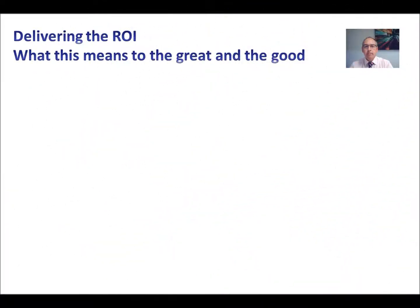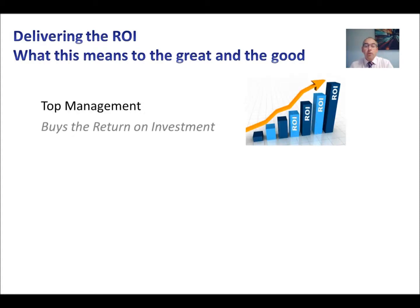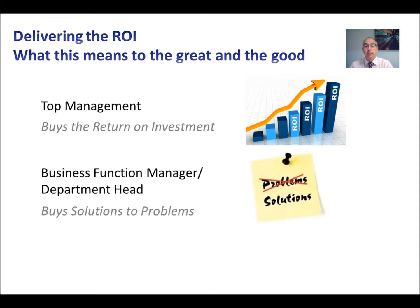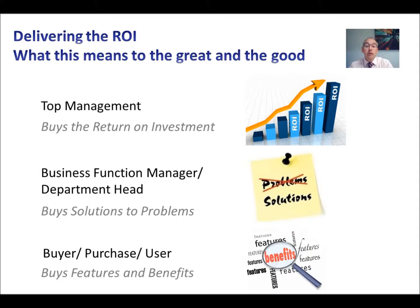What does this mean to the stakeholders? There are three stakeholder groups to consider. First, directors and top management — they buy return on investment, and cost reduction is a key driver for them. Senior and middle management are interested in buying solutions to problems: data entry is a problem that requires resourcing, and if we remove that requirement it makes their life easier. The analysis of service via good receipt note entry means they can go back to suppliers to improve how they do business, reducing non-conformance.